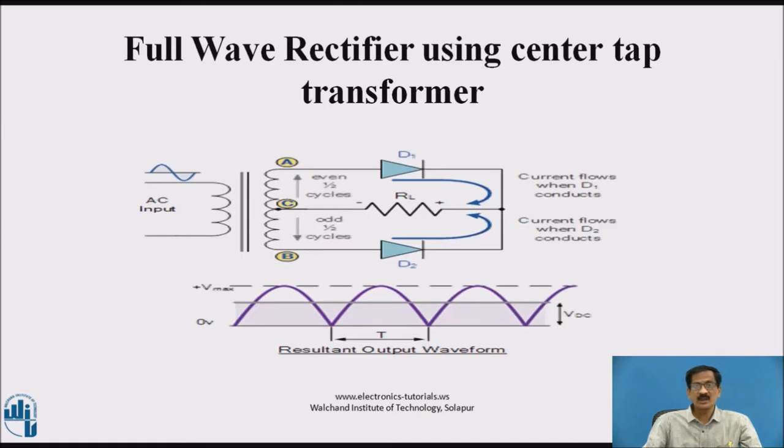Now, full wave rectifier using center tap transformer. In bridge rectifier, we used four diodes D1, D2, D3, D4 in the Wheatstone bridge manner. But using a center tap, it requires only two diodes, D1 and D2. The only modification here is we are using a center tap transformer, meaning we have two equal windings at the secondary. The total secondary voltage is equally divided across two secondary windings.